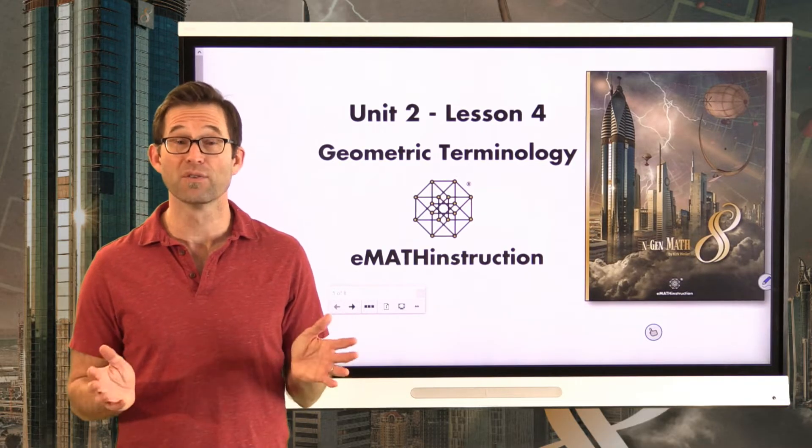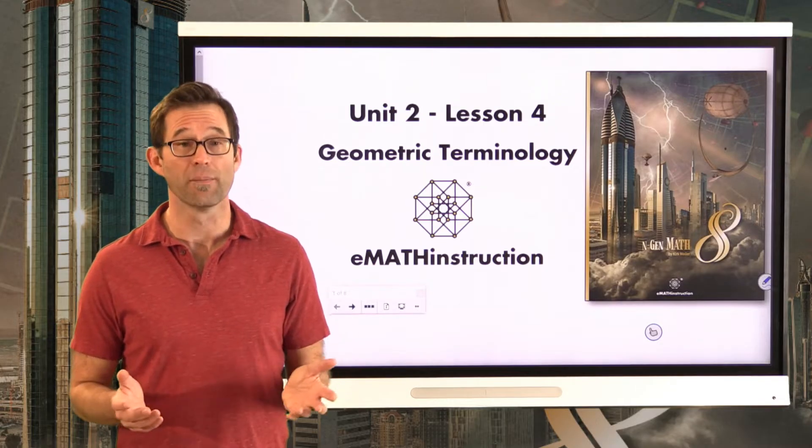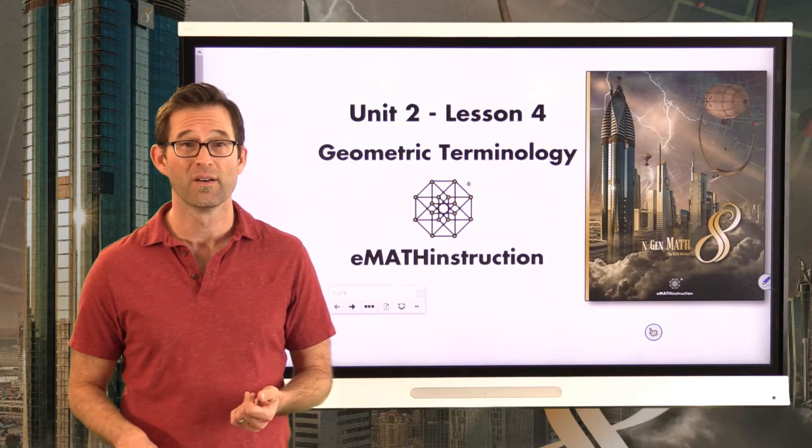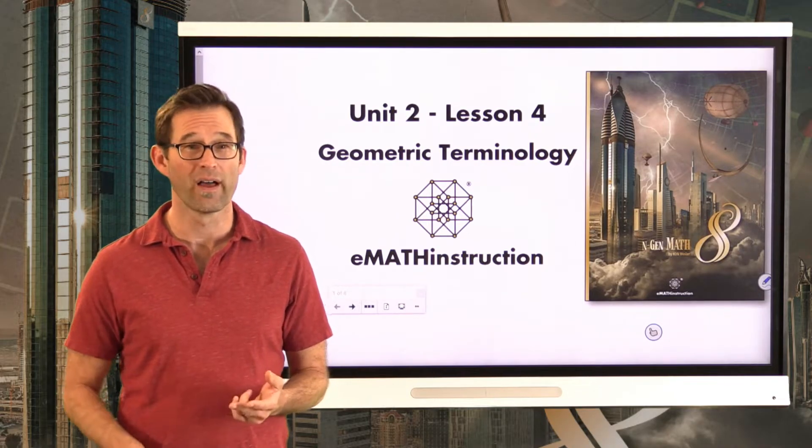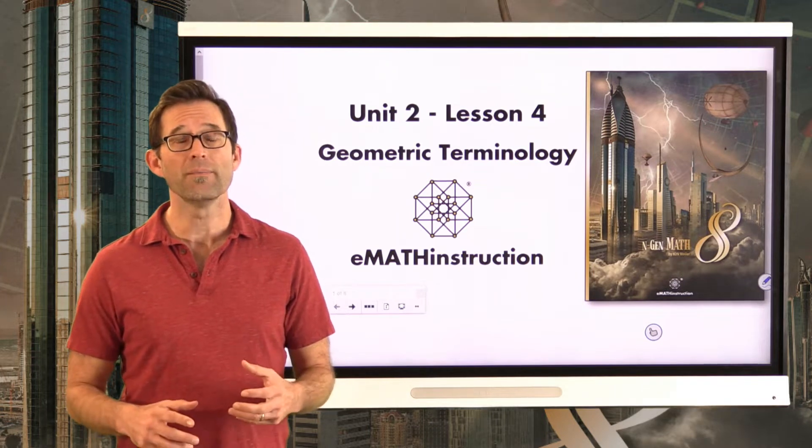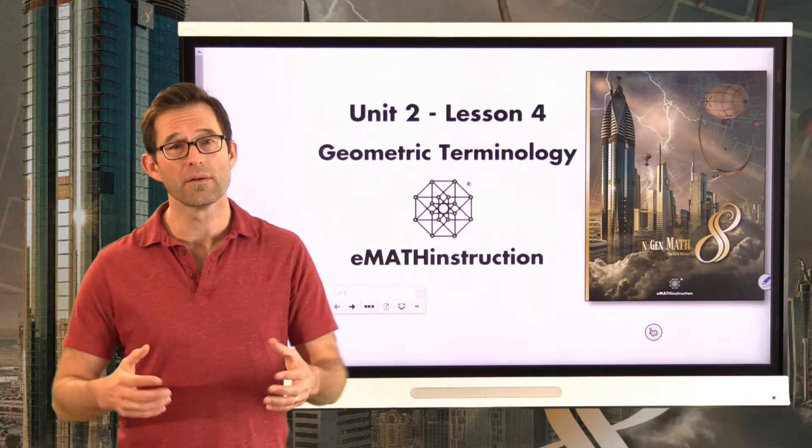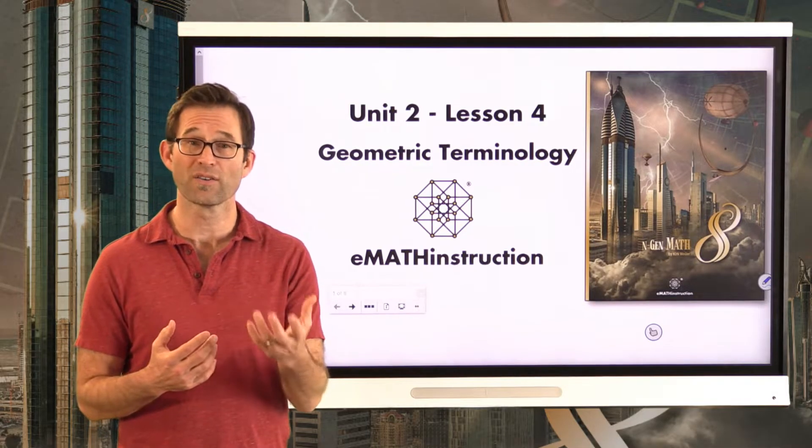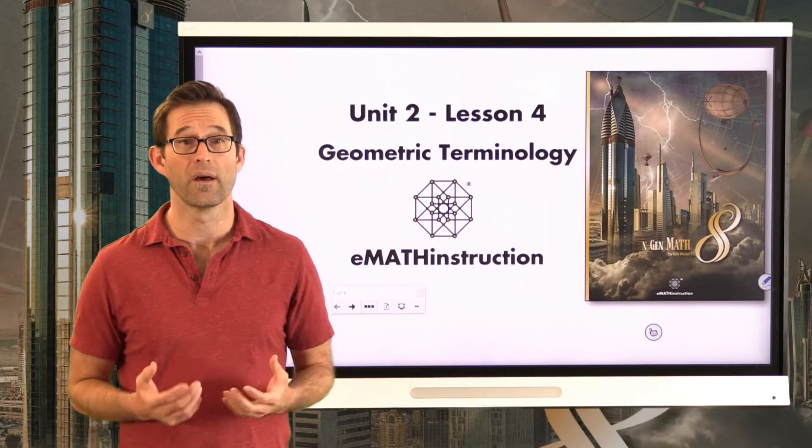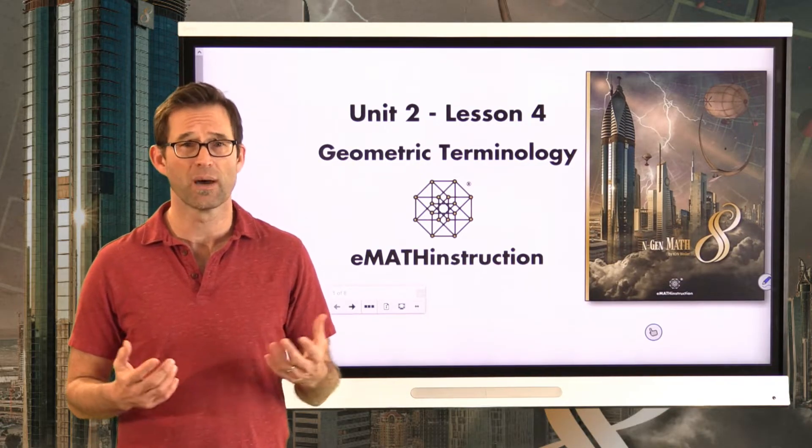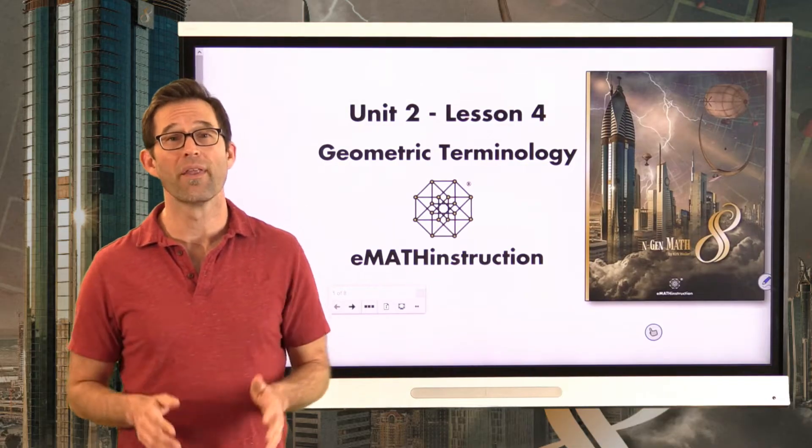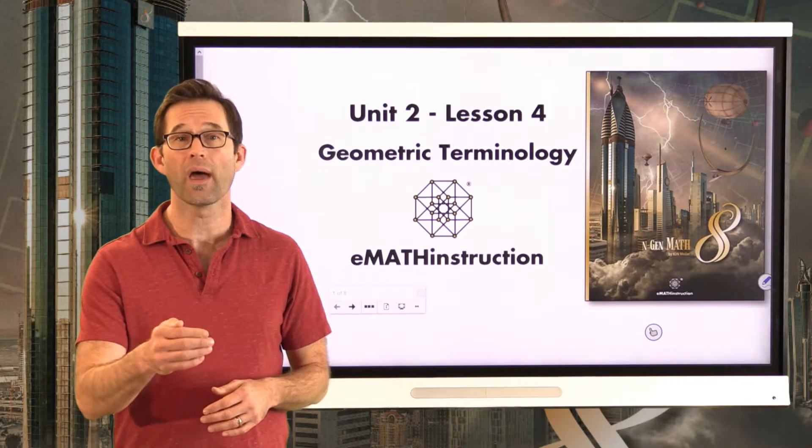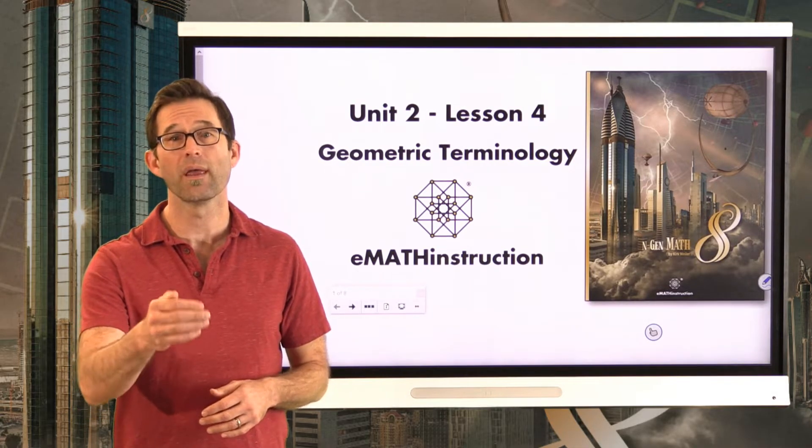We've already seen a bunch of geometric terminology so far. I mean anytime we name something, it's a piece of terminology: point, ray, line, segment, angle, adjacent angle, vertical angle, supplementary, complementary. But in anything that you study, there's always going to be vocabulary, there's always going to be language that we need to have in common so that when I talk to you, it doesn't sound like it's Greek coming out of my mouth. Although a lot of geometry was born in Greece. Anyway, more on that in high school level geometry.